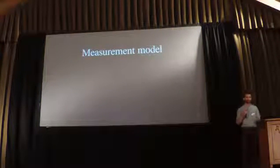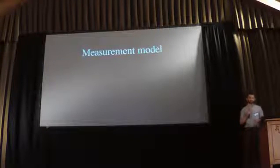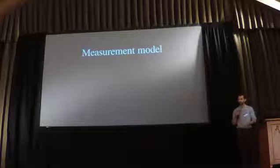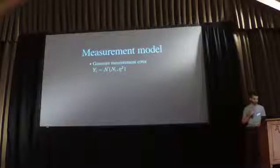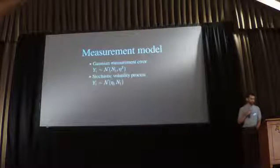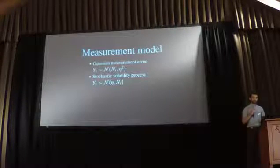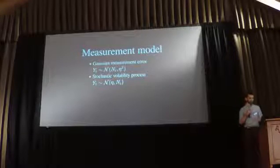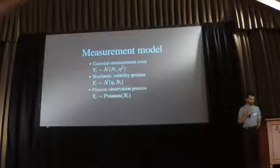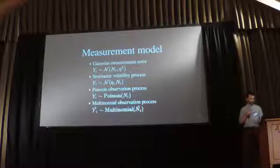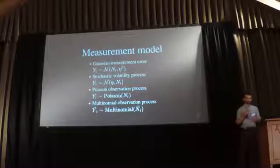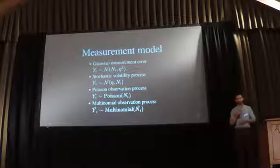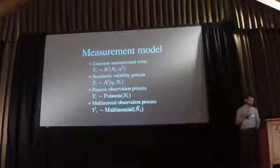We're never really observing the true process itself — we have a measurement model. Like the HMM, we have a hidden latent state and then an observed state. You could have Gaussian measurement error, or in the finance case a stochastic volatility process where the variance is driven by this Markov chain and you're observing the returns. Or you could have a counting process or, in my case, a multinomial distribution because we're looking at many bacteria over time with changing relative abundances.